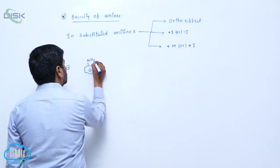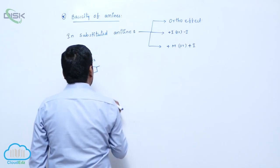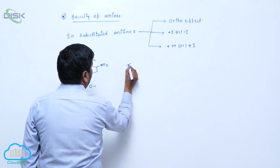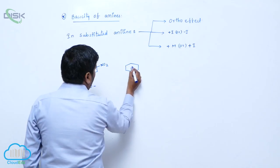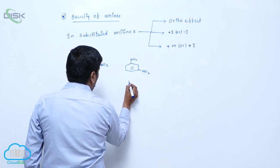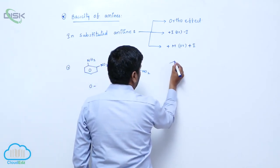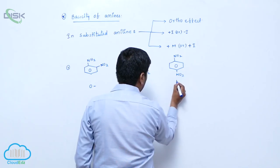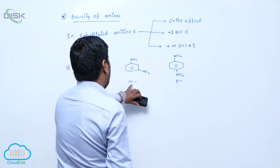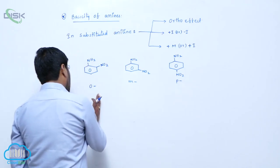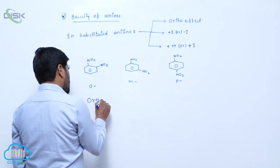This is Ortho-Nitroaniline. This is Meta-Nitroaniline. Next one is Para-Nitroaniline. Now here we should consider the Ortho-Effect.